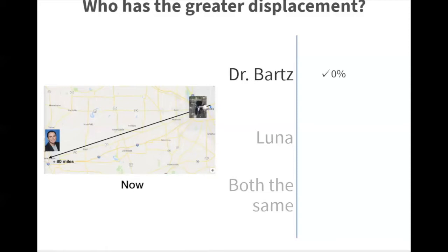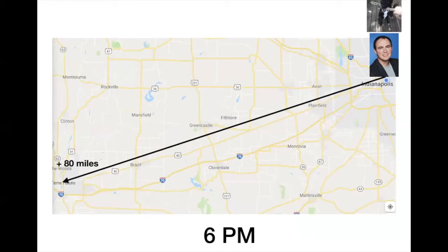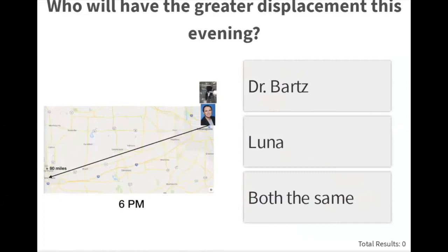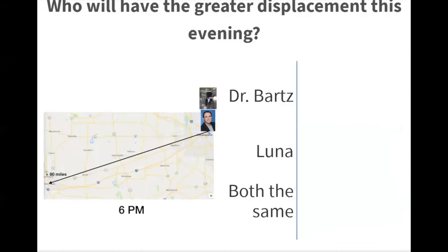When I'm done teaching for the day, I head back home, pick up Luna, and we go back home. By 6 PM, we're both back home. The question is: at 6 PM tonight, who will have the greater displacement — me, Luna, or is it both the same? The correct answer is both the same, because displacement is where are you at that moment.